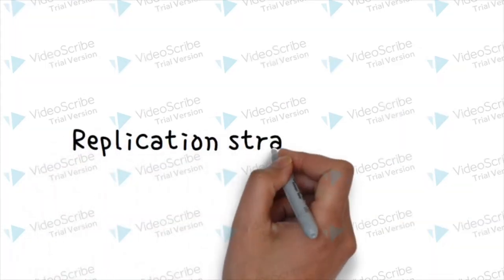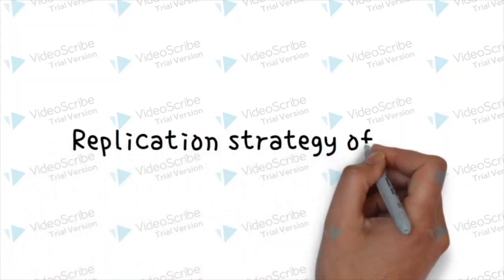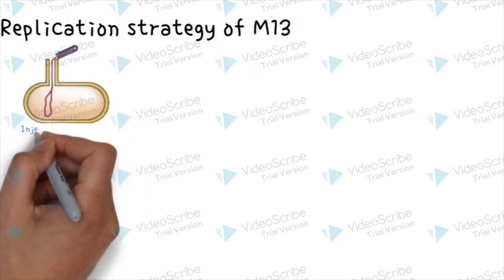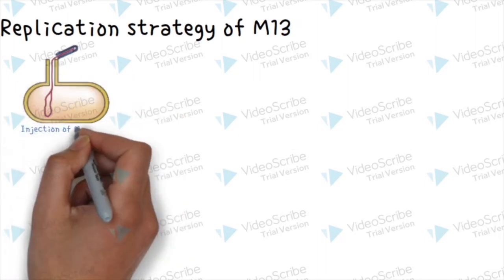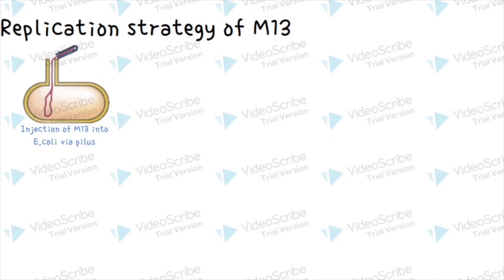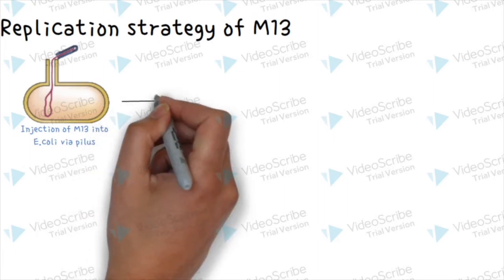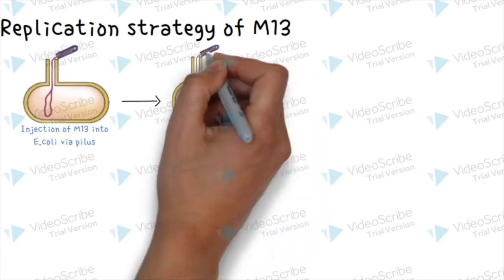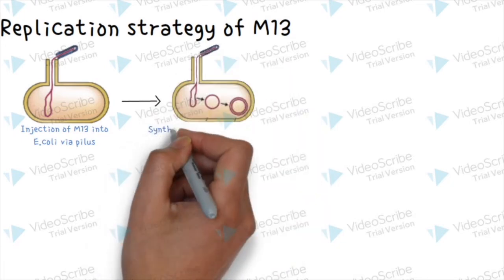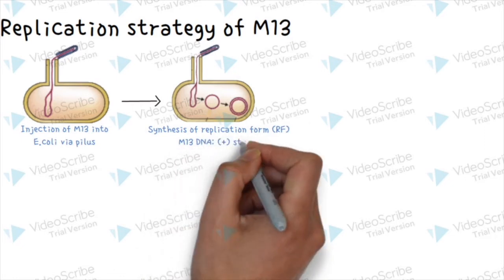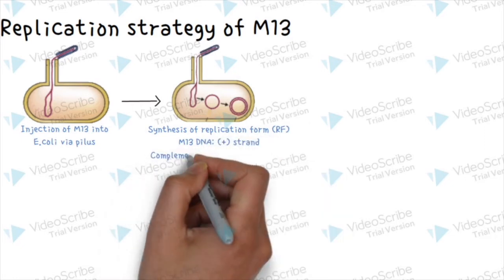Now let's look at the replication strategy of M13. First, the M13 DNA molecule is injected into E. coli via the pilus — the structure that connects two cells during sexual conjugation. Once inside the cell, the replication form, or RF, is synthesized using the single-stranded M13 DNA, or positive strand, as a template.